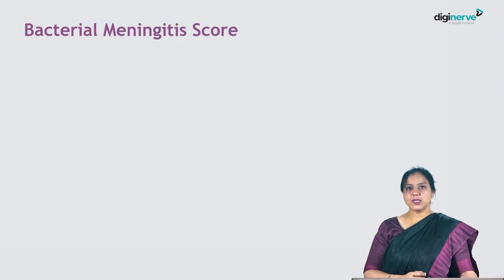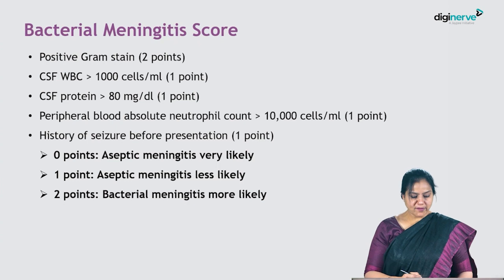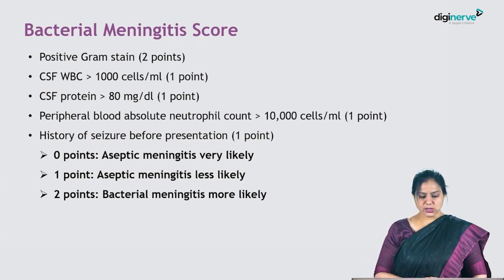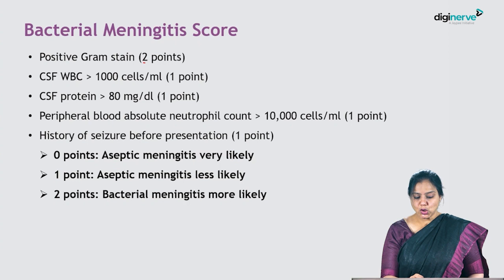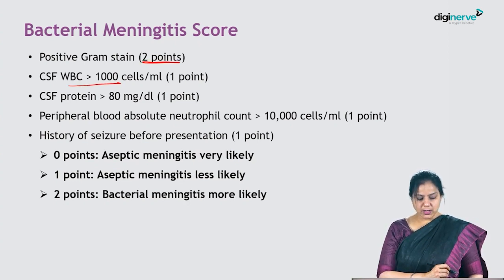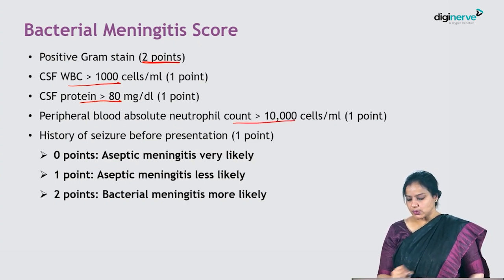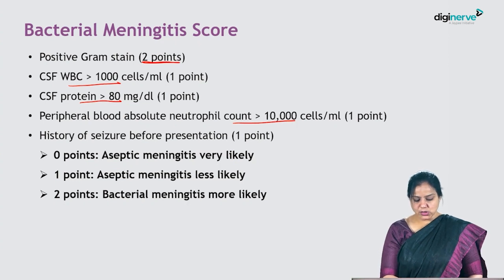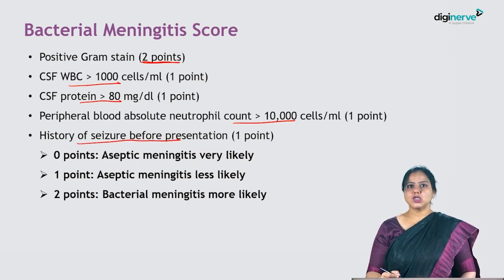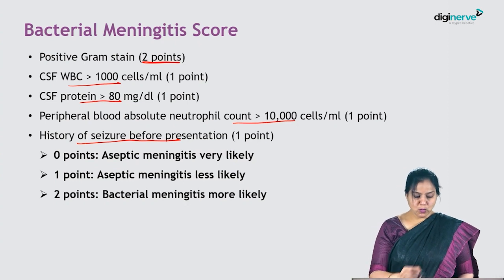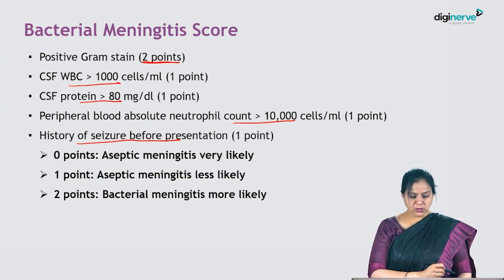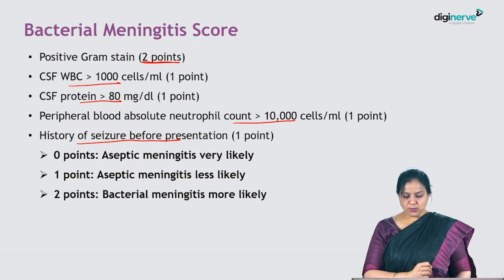The bacterial meningitis score has five parameters. Gram stain positive gives two points. CSF WBC more than 1000 cells per mL, protein more than 80, and peripheral blood ANC more than 10,000 cells per mL — note this is peripheral blood ANC, not CSF — and a history of seizure before presentation each give one point.